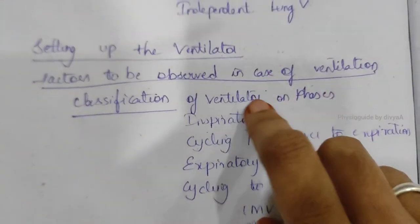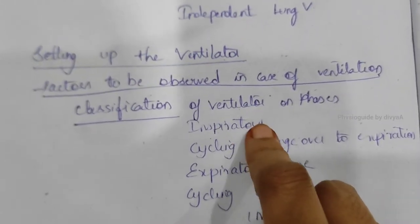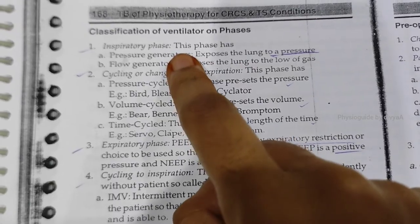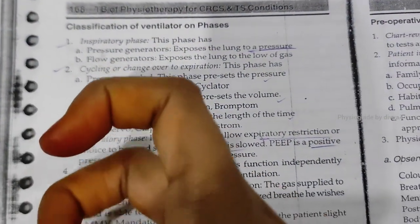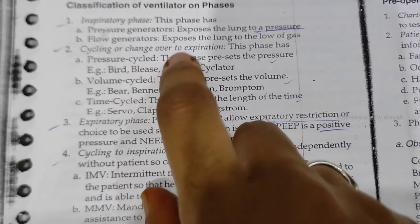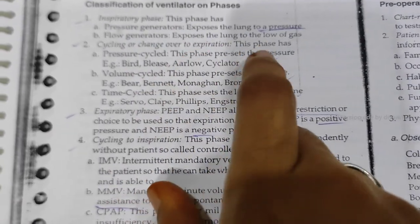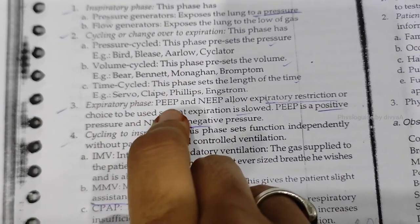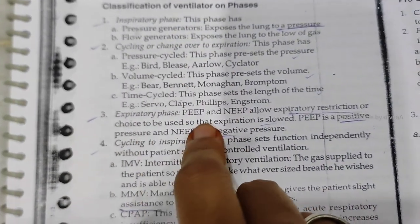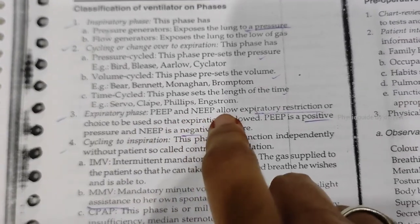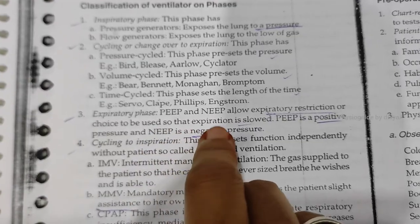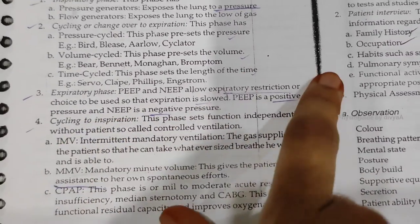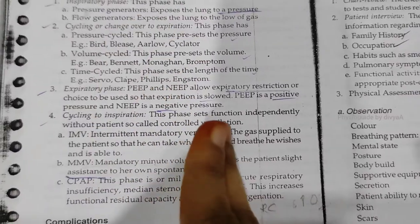Classification of ventilator by phases. Inspiratory phase: includes pressure generators, which expose the lung to a set pressure, and flow generators, which expose the lungs to a flow of gas. Cycling or changeover phase: the changeover from inspiration to expiration can be pressure-cycled, volume-cycled, or time-cycled. Expiratory phase: PEEP (positive end-expiratory pressure) and NEEP (negative end-expiratory pressure) allow expiratory restrictions, making expiration slow.